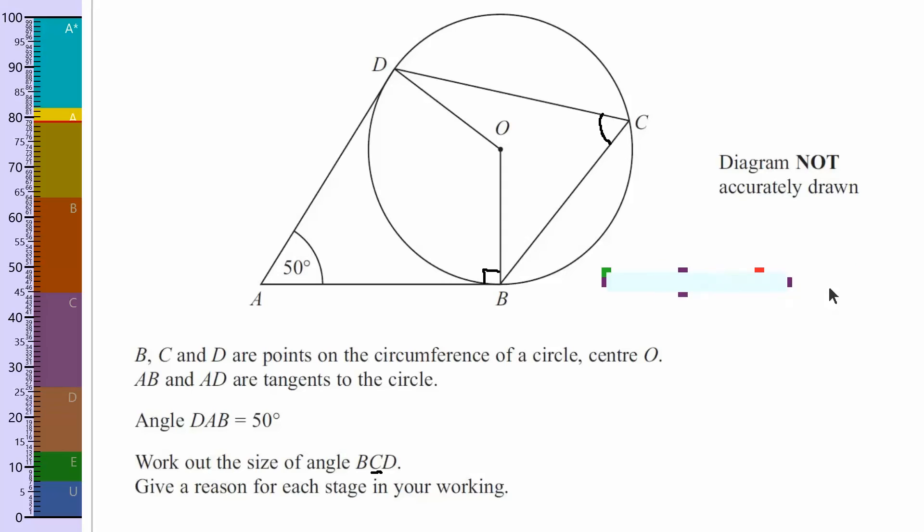So angle ABO and ADO equal 90 degrees. Angle between tangent and radius. And that's absolutely fine. You might want to say is 90 degrees. That's absolutely fine to write down. So we've got the first one written down.